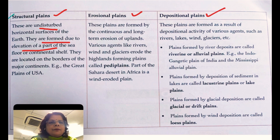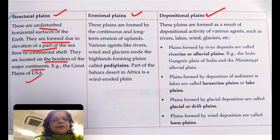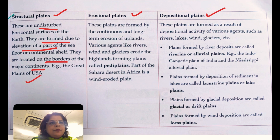Structural plains are located more majorly at the borders of the continents — like the USA's Great Plains. By structure they are completely flat land areas, so they are known as structural plains.